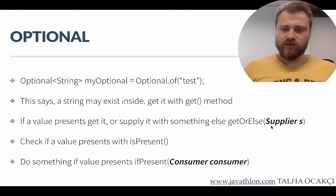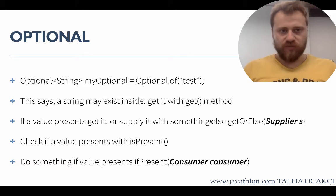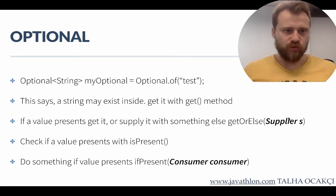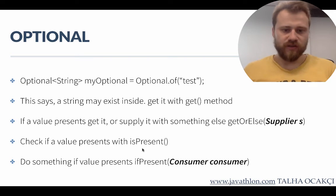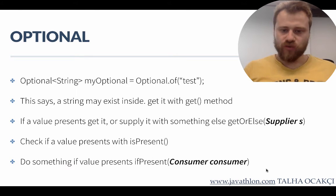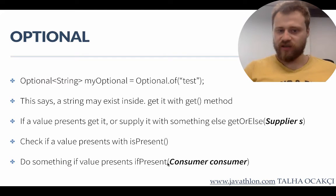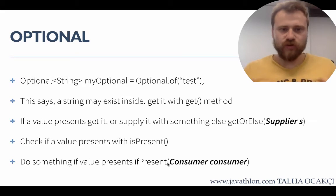Another method of Optional is orElse, which means: get the object if one is present inside this box, or else get an object from somewhere else. This method accepts a Supplier, which creates an object according to your logic. The isPresent method checks for presence, and ifPresent is used with a Consumer — if an object is present inside the Optional box, consume it with the given Consumer. Now let me do an example in Eclipse.